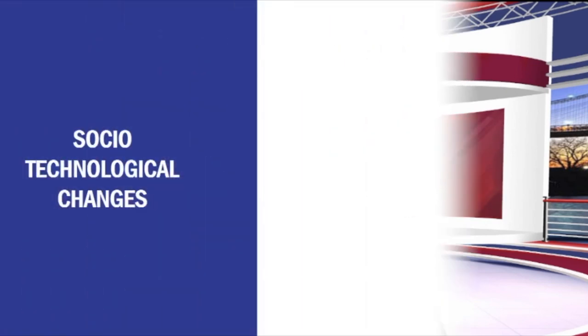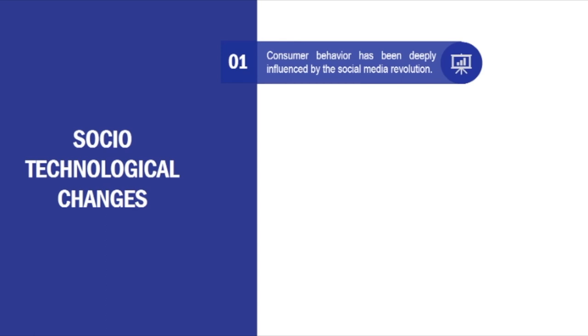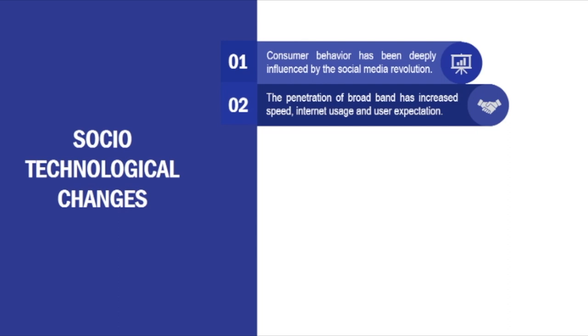There have been certain social and technological changes in the world over the last 20 years. Consumer behavior has been deeply influenced by the social media evolution. Today, the maximum time a child or even an adult spends is on social media, which positions social media as a very important tool for a marketer. Broadband penetration has increased, speed has increased — we are looking at 4G in India and 5G being launched. Internet usage has increased a lot and user expectations from broadband have also increased.